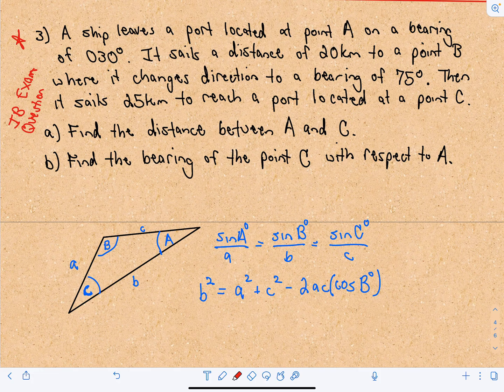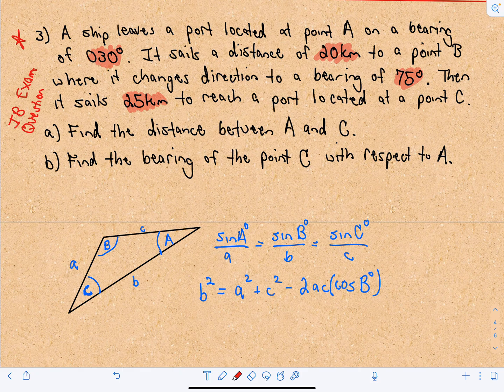A ship leaves a port located at point A on a bearing of 30 degrees and sails a distance of 20 kilometers to a point B, where it changes direction to a bearing of 75 degrees. It then sails 25 kilometers to reach a port at point C. In part A we want to find the distance between A and C, and in part B we want to find the bearing of point C with respect to A — meaning, if you were at point C, which bearing would you need to travel to get back to point A.